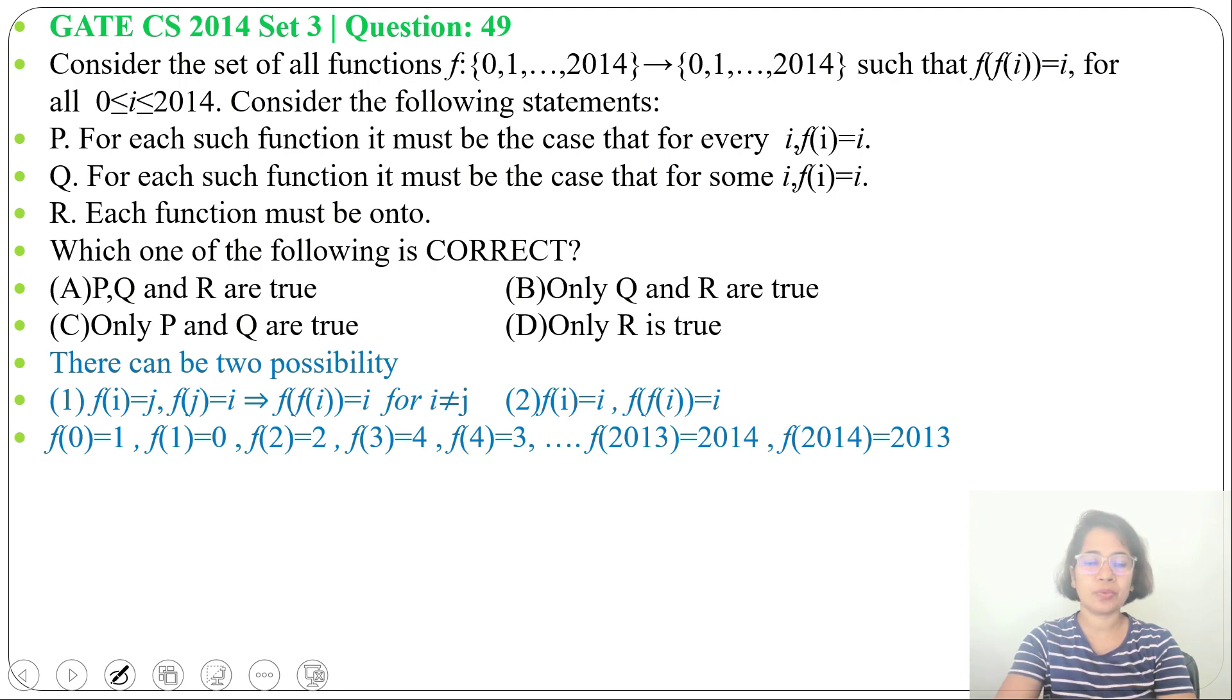let f(0) = 1, f(1) = 0, f(2) = 2, f(3) = 4, f(4) = 3, f(2013) = 2014, f(2014) = 2013.